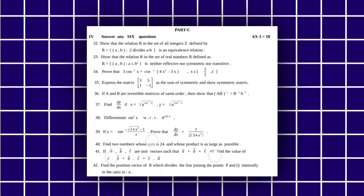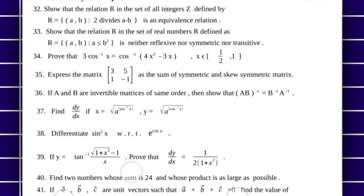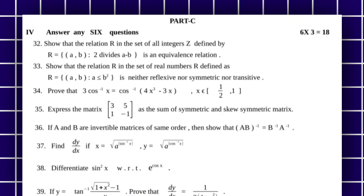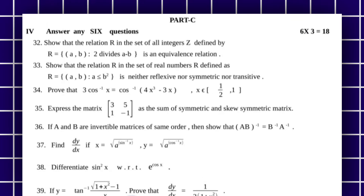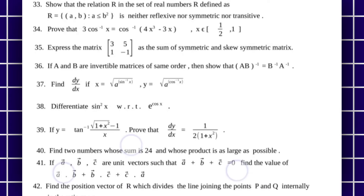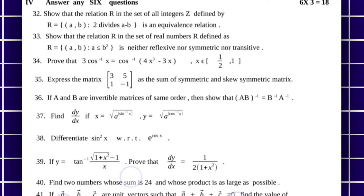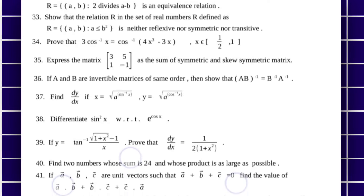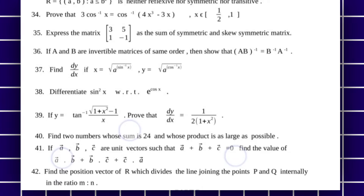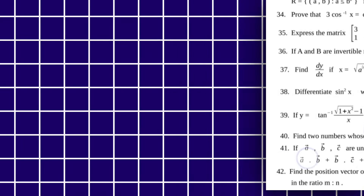Part C is the 3-mark question section. We have the 4th main here with 3-mark questions. Totally there are 11 questions, and you have to attempt 6 of those 11 questions. The total marks for this section is 18 marks — 6 into 3 is 18.